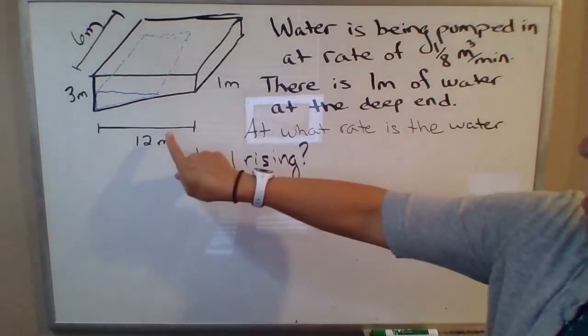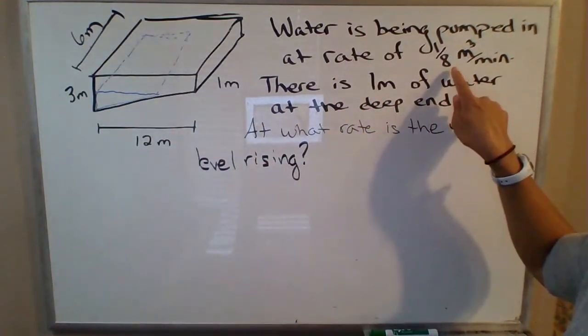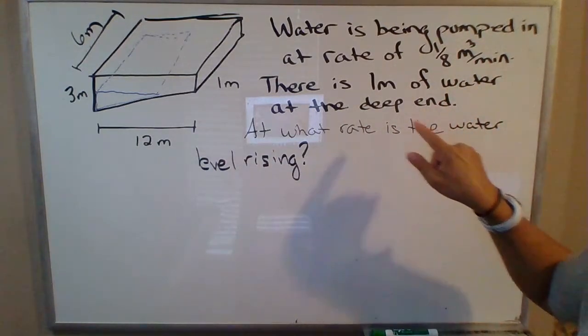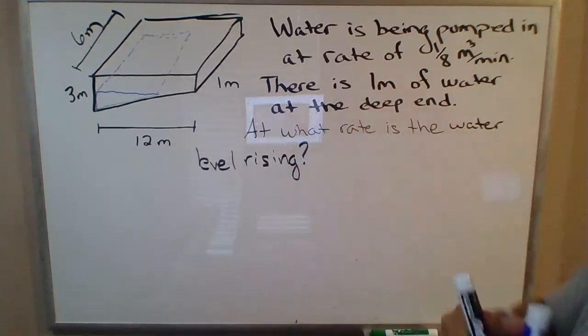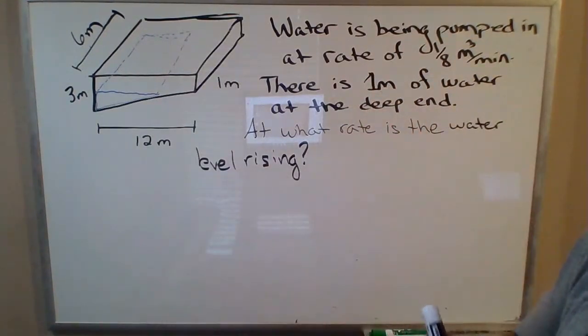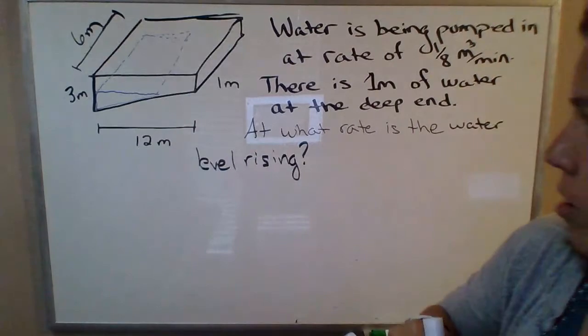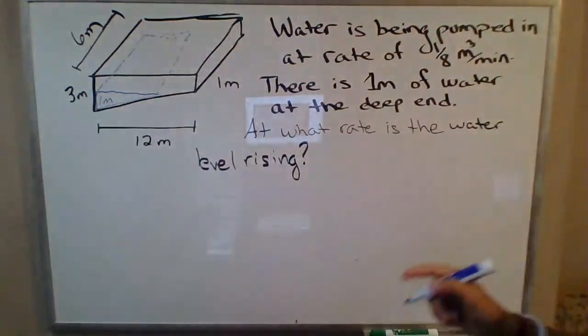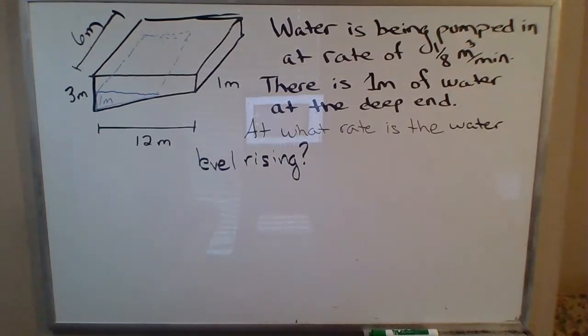Water is being pumped into that pool at a rate of one-eighth of a cubic meter per minute. When there's one meter of water at the deep end over here, this one meter, at what rate is the water level rising?